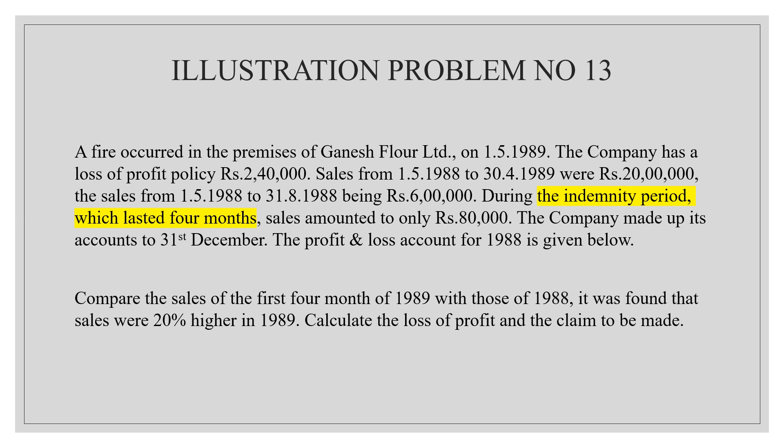In the second step, increase or decrease for trend. In the question it was found that sales were 20% higher in 1989. That is the effect on the period — normal 4 months — comparatively to the previous year. So this is the sales increase, and the increased amount we add in the standard turnover. 20% on the standard turnover of 6 lakh — 20% is 1,20,000.